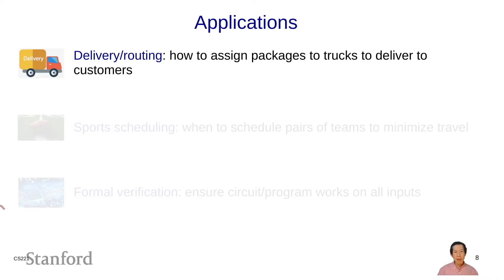Constraint satisfaction problems appear in a number of applications, most of which revolve around large-scale logistics, scheduling, and supply chain management. Companies such as Amazon have to figure out how to put packages on vehicles and deliver them to customers while minimizing costs and meeting promised delivery times. Here, the variables might be the assignment of packages to vehicles, and the factors would include travel times and various costs. Ride-sharing services such as Uber and Lyft also have to figure out how to best assign drivers to riders — all extensions of the classical vehicle routing problem.